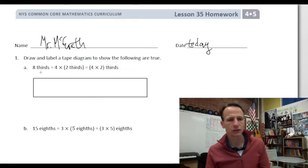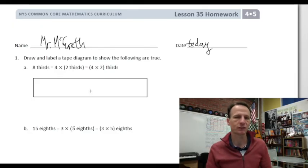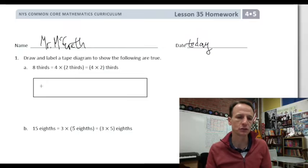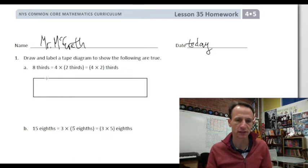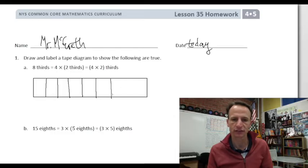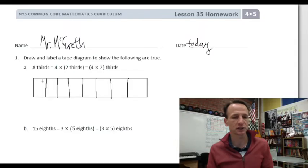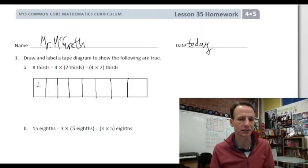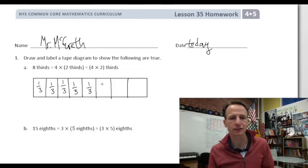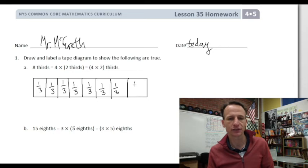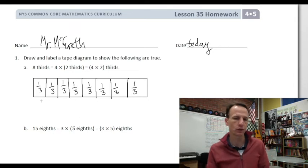Here's a nice little tape diagram. What I want to draw to start with is just 8 thirds. In this rectangle I want to create eight partitions, so I'll draw seven reasonably equally spaced lines. Well those are reasonably equally spaced and now each of these is one third. Let's take a moment and label them all one third. This is how we're drawing 8 thirds.